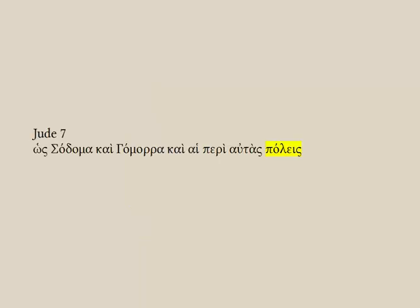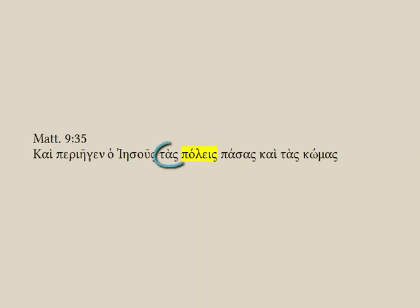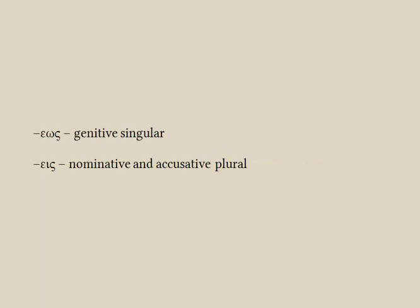Here in Jude 7, the definite article hi helps, and the ace points to an epsilon stem that's been contracted, so you expect it to go back to either os or is, since we now have two endings for the nominative. And polis is the form that you'll find. Here in Matthew 9, the article tas points to the accusative plural parsing — that ending could be either nominative or accusative plural, but the article sorts it out. For pattern 5b, pay special attention to eos for the genitive singular ending and the ace that can be either a nominative or accusative plural ending.